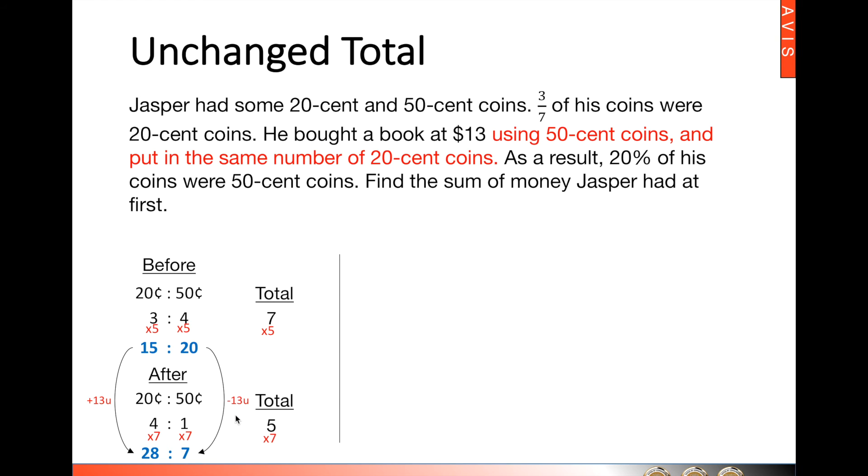This is one of the best things to note: when there is an unchanged total, or sometimes we also call this the internal transfer, one side or one variable must gain a certain unit, and the other side must lose that same number of units. Use this to check if you are on the right track. Then the question is this: why did we lose 13 units for 50-cent coins? How did this happen? Then we realize, hey, he bought a book at $13 using 50-cent coins. So this is the reason why we lose these 13 units.